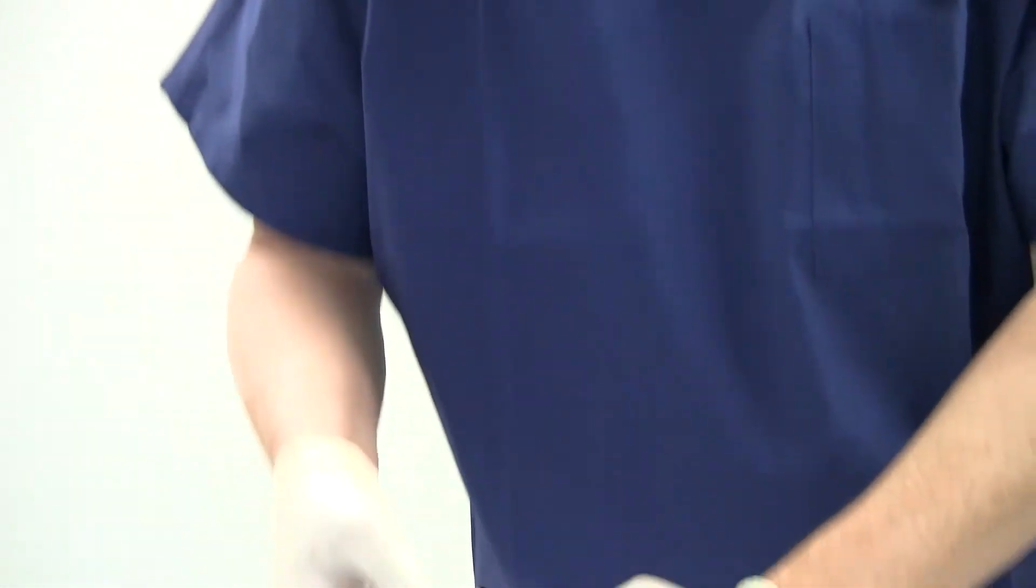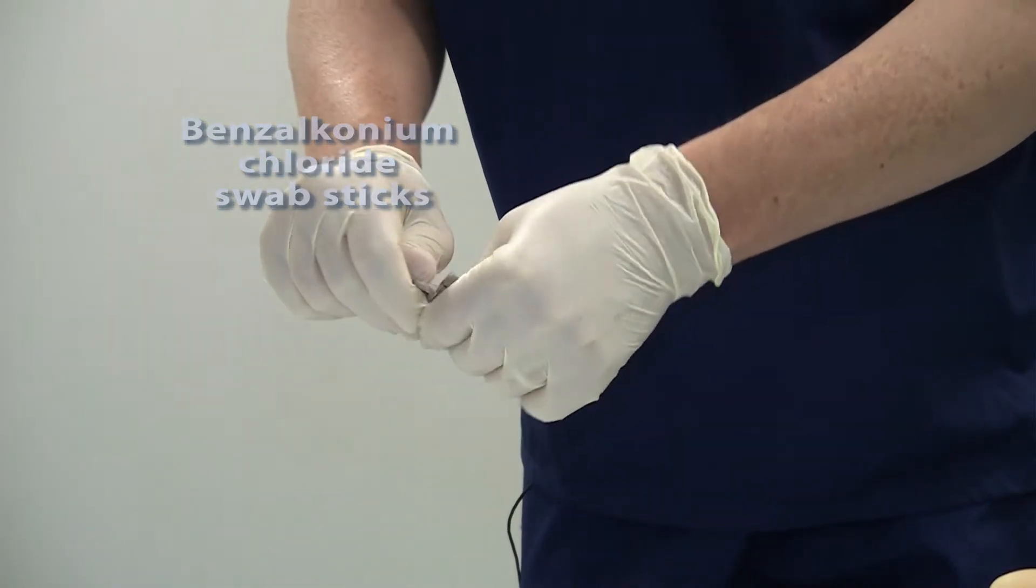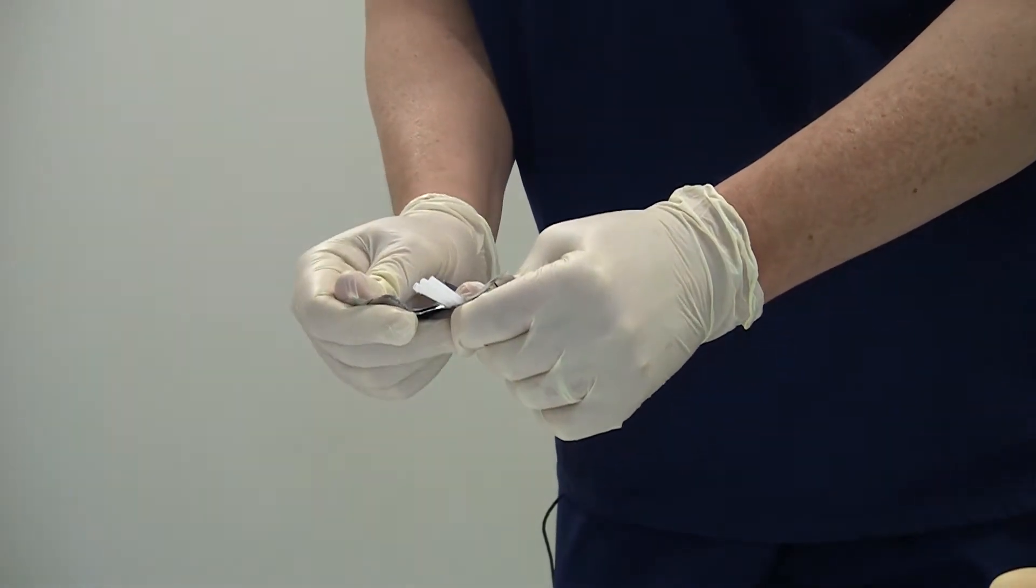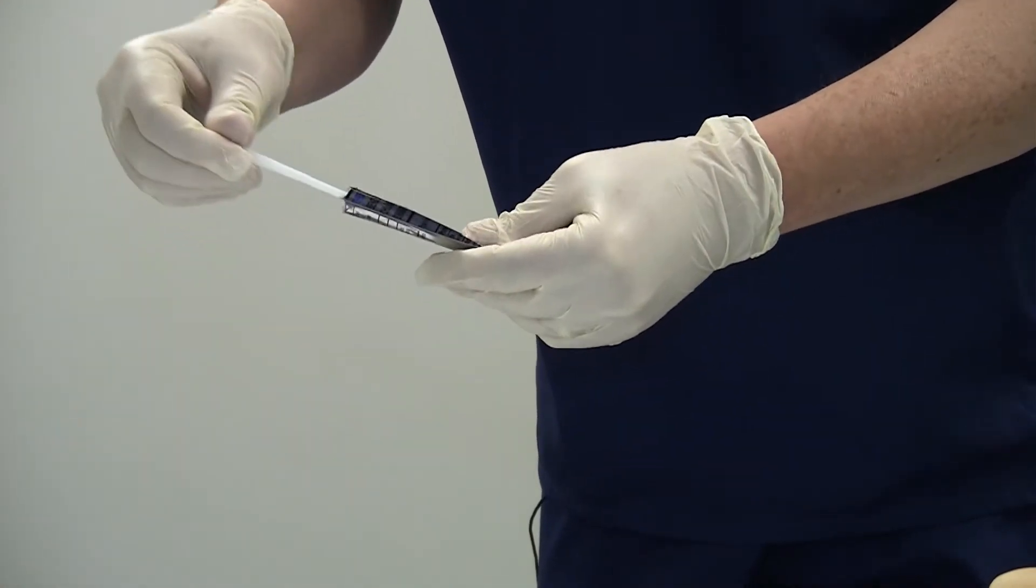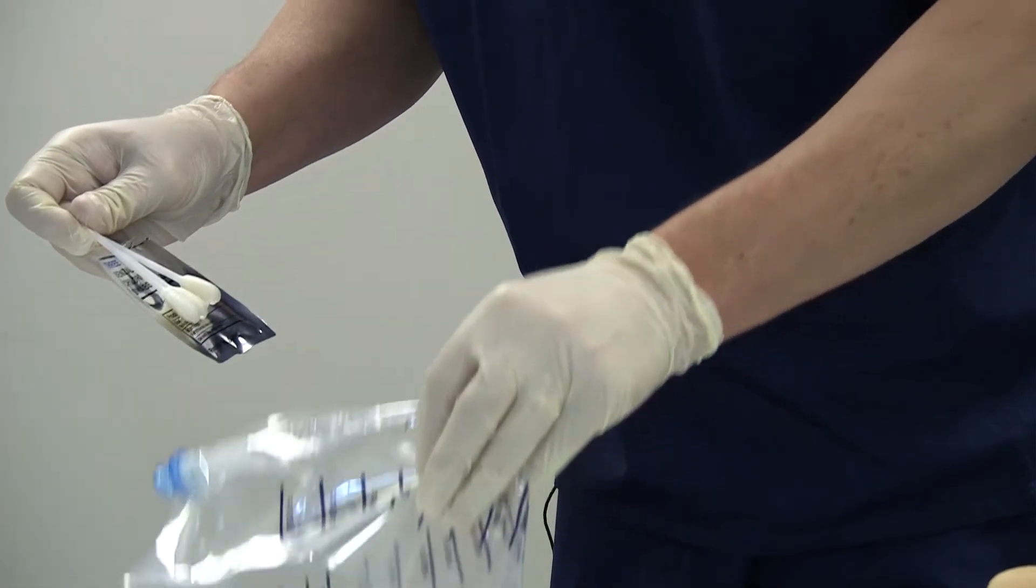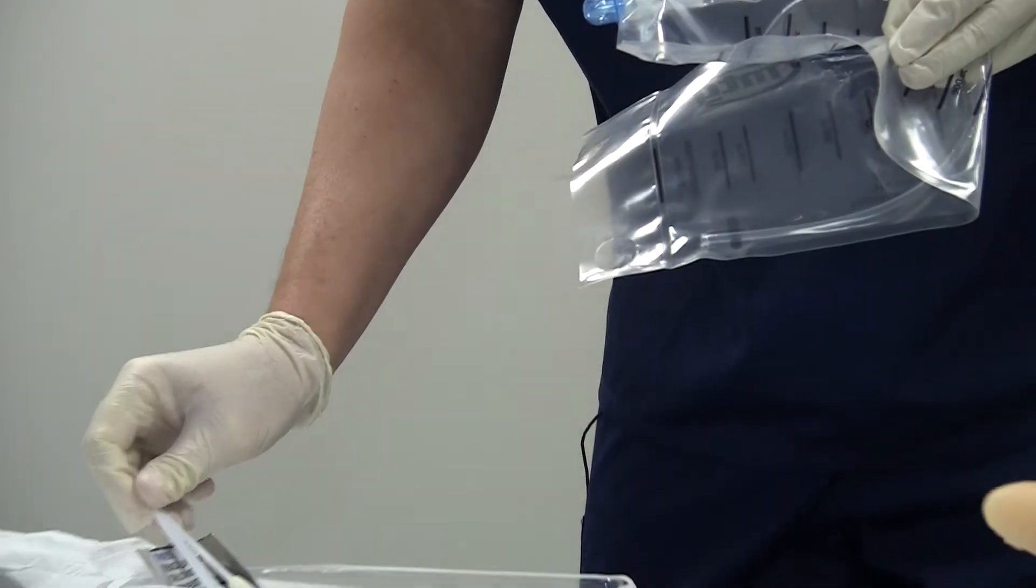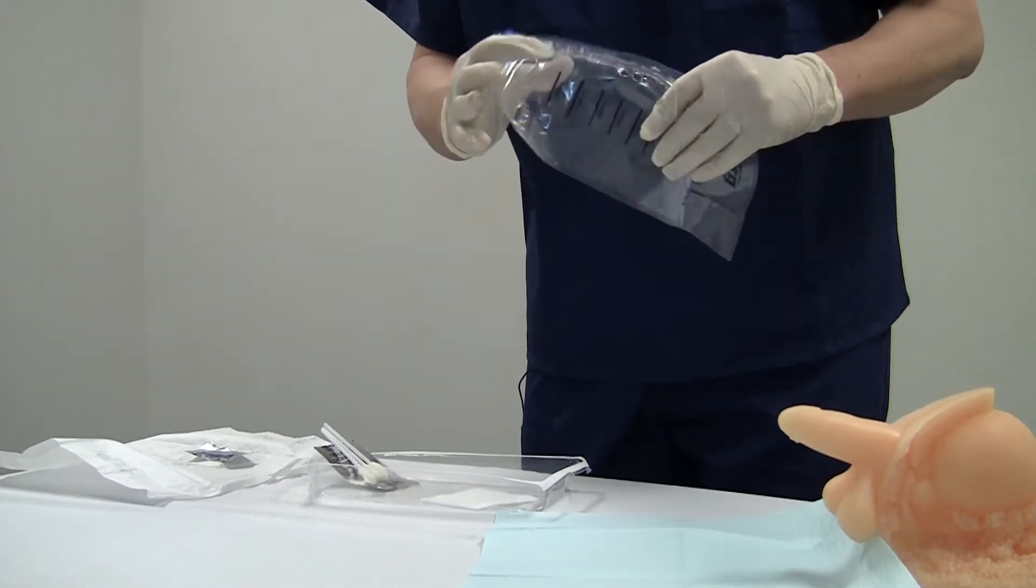The next kit component after we've placed the underpad are the benzalkonium chloride swab sticks. There's three of them in here. These are our antiseptic. Tear the top of the package off and remove the three swab sticks. I like to take them entirely out of the pack and set the pack right back in my sterile field. At the same time, I take the catheter with my other hand and remove it from the kit.